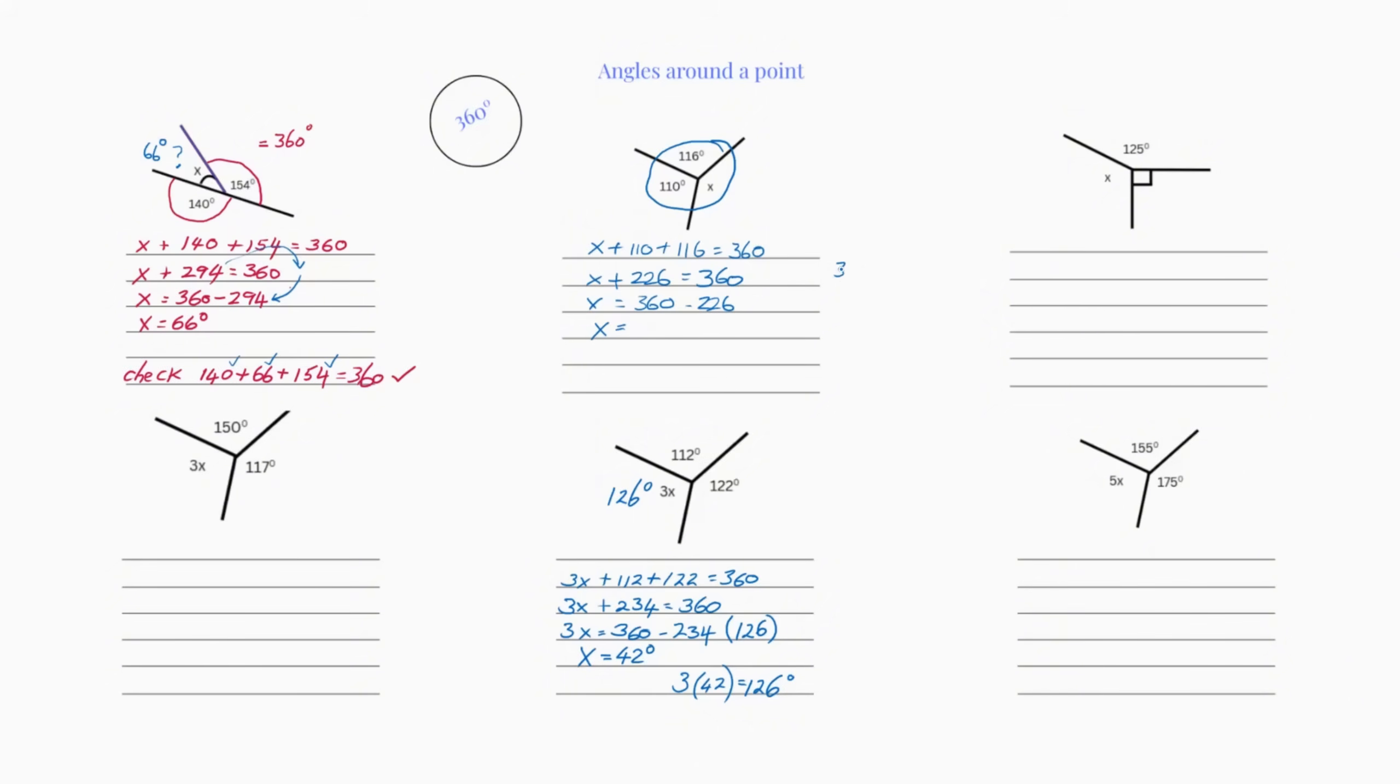We'd use long subtraction. Zero from six, I can't do. Let's borrow one. That gives us four. Five take away two is three. Three take away two is one. So that's 134.